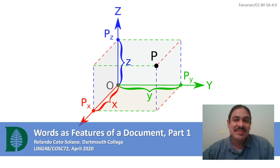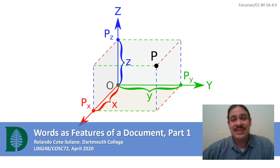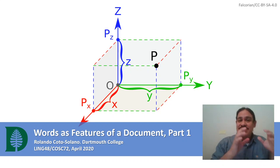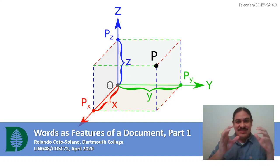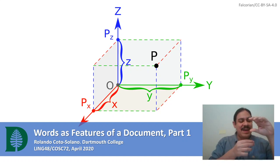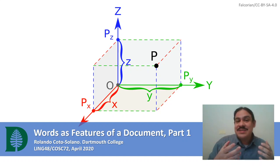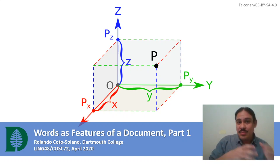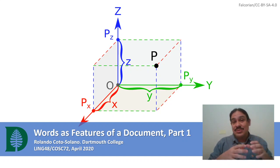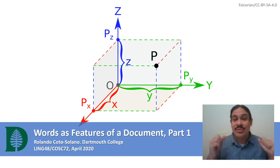Hola y bienvenidos de vuelta. Hi and welcome back. In the previous video we described words as bundles of features, so that for example a word could be defined as having the feature anger yes or no, having the feature joy yes or no. We used these features to describe the emotions associated to a word and then the emotions associated to a document overall.